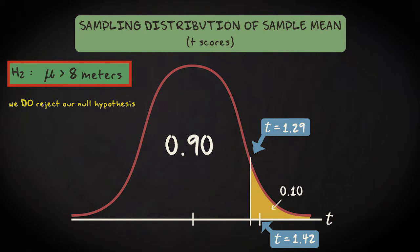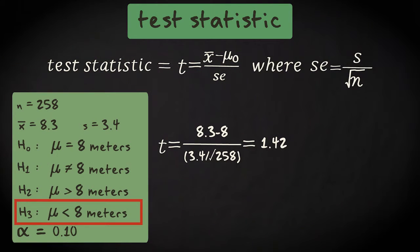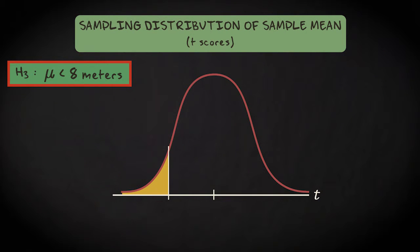The final alternative hypothesis is that the population mean is smaller than 8. In this case, we do a left-tailed test. That looks like this. We have a cumulative probability of 0.10 at the left side of the distribution. This is exactly the mirror image of our previous right-tailed test, so the critical value which corresponds to this rejection region is minus 1.29.